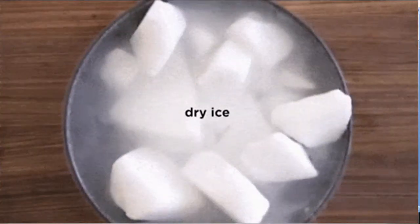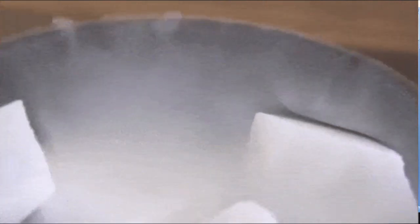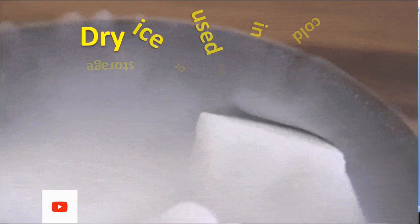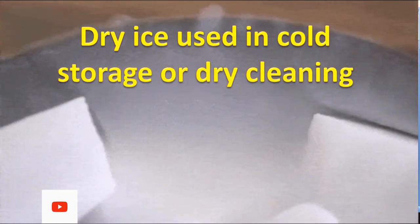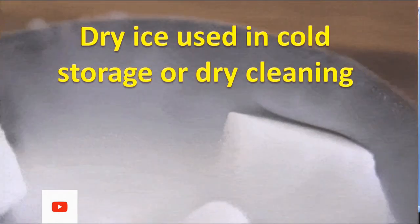When carbon dioxide is cooled about minus 78 degrees Celsius, it changes to dry ice. Dry ice is used in cold storage as a cooling agent or in dry cleaning of clothes.